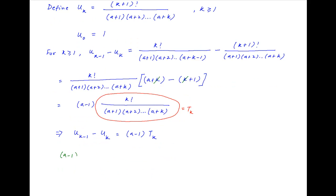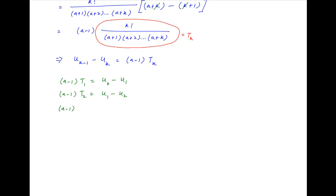Now put k=1 to get (a-1)·t1 = u0 - u1. Put k=2 to get (a-1)·t2 = u1 - u2. Put k=3 to get (a-1)·t3 = u2 - u3, and so on. Put k=n to get (a-1)·tn = un-1 - un.